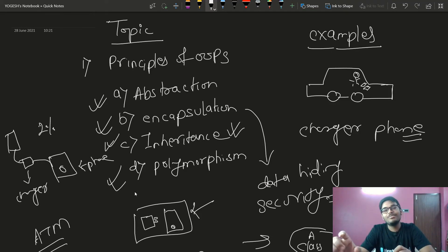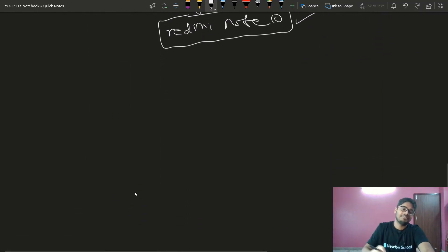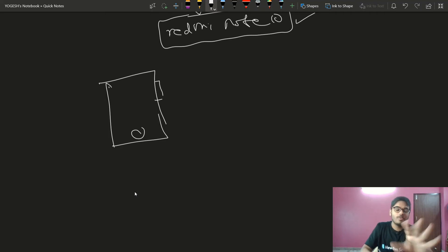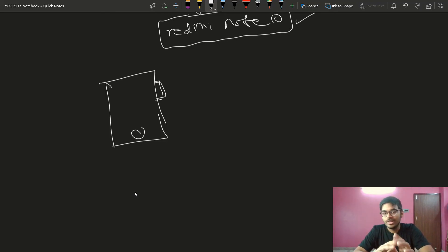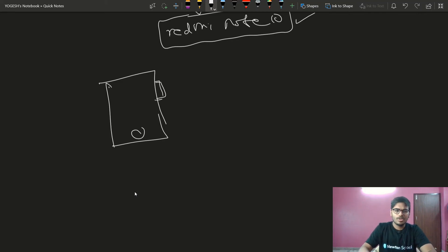Now for polymorphism. Using a function for more than one purpose is called polymorphism. A function can have more than one feature. For example, on a smartphone, on the side there is a button. One click locks the screen, a second click opens the screen, and another click turns the screen off. The same button performs multiple actions — that is polymorphism.